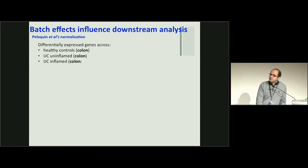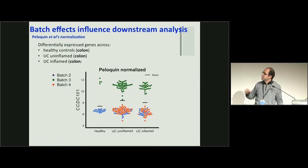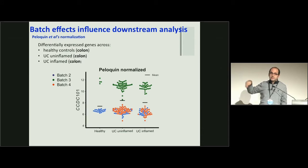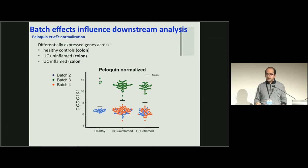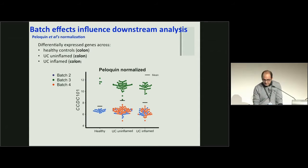How do these batch effects influence downstream analysis? Looking at three different groups in colon cancer tissue - with gene expression on the y-axis and groups on the x-axis - you can see that between healthy and inflamed groups, certain genes appear differentially expressed. But this shift in the mean is because of batch effects, not a real difference. This is how batch effects can influence downstream analysis - we saw many genes in this paper affected by batch effects that are not real signals.